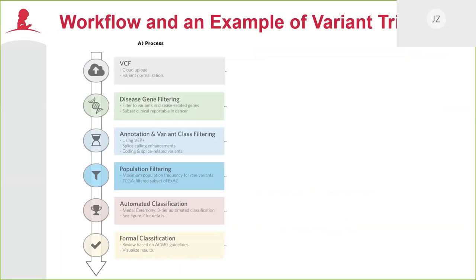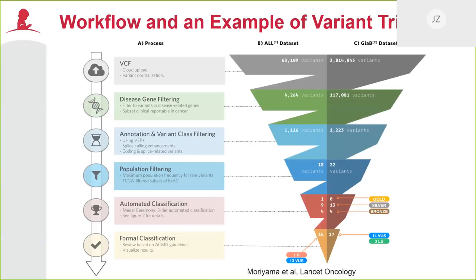PecanPie includes these processes: upload a VCF file, define a set of disease genes, perform annotation and variant class filtering, apply population filters, do automated classification assigning gold, silver, and bronze medals, and then bring results to a panel for formal classification utilizing ACMG rules.